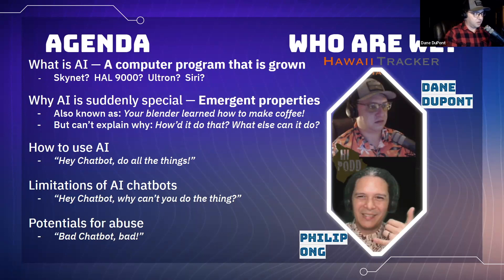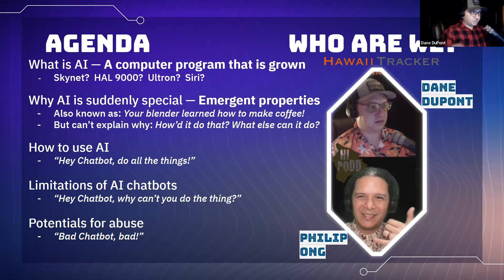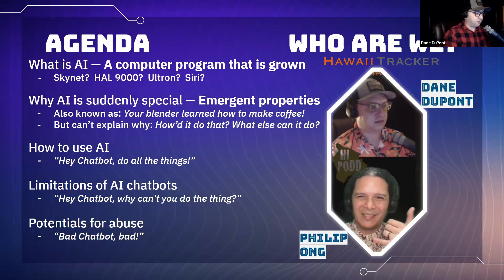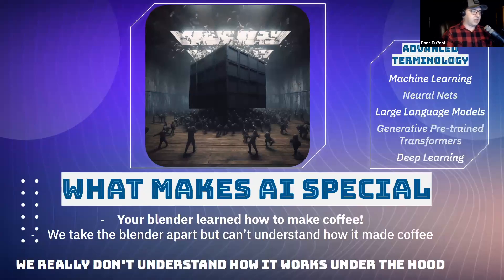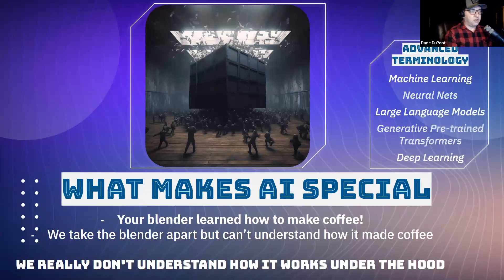So we're going to go through things going down the agenda. We're going to talk about how we use AI, how to automate everything, the limitations, why it can't do everything, and then the potentials for abuse, which are real and we are already seeing. So again, this is what makes AI special.